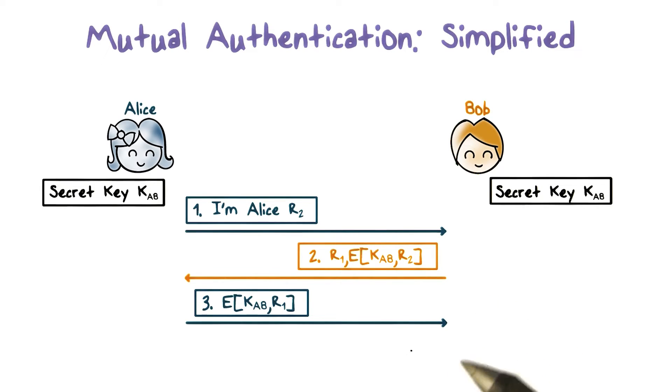Third, Alice then sends Bob the decipher text of R1 and Bob decrypts it and matches with the plain text R1 to authenticate Alice.